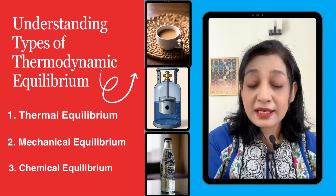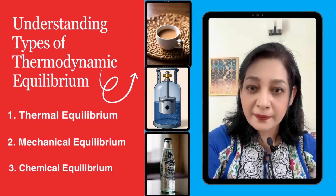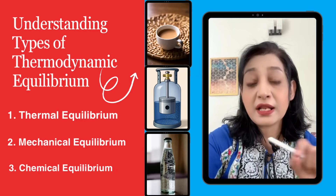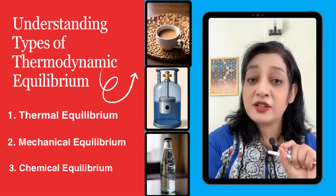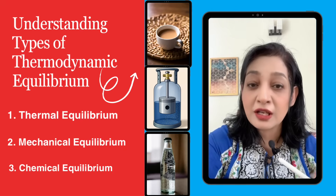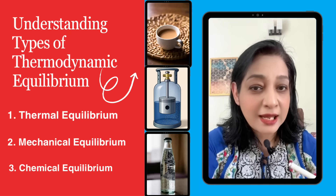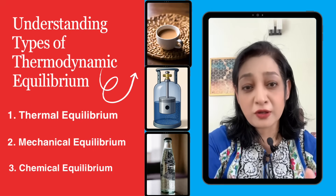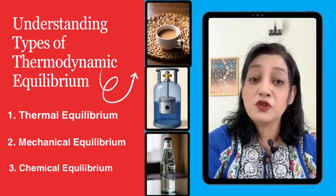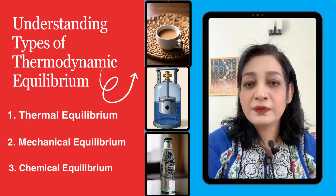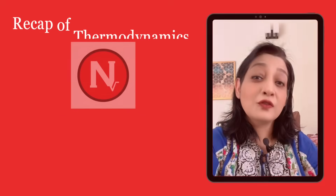Number three is chemical equilibrium: no chemical reaction occurs, or the forward and reverse reaction rates are equal. There is no change in chemical composition over time. For example, in a sealed soda bottle, CO2 dissolving into the drink and escaping back into gas form reach a balance.